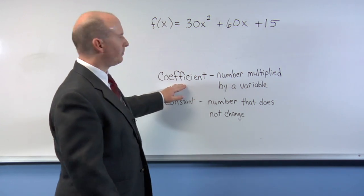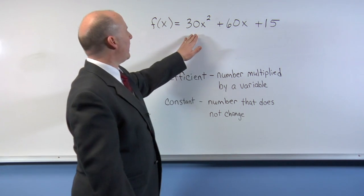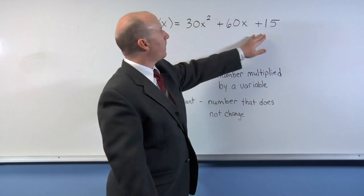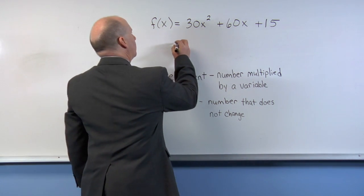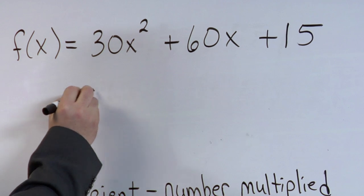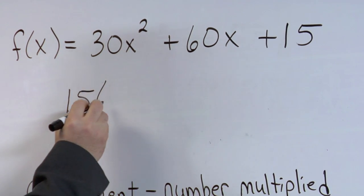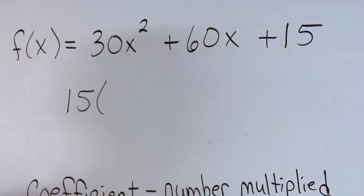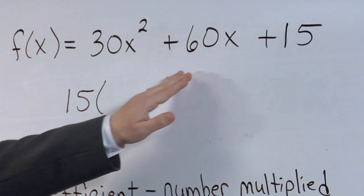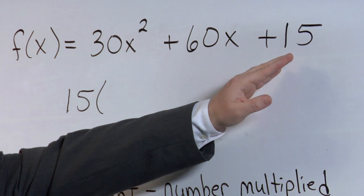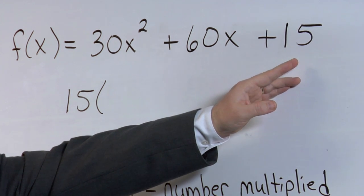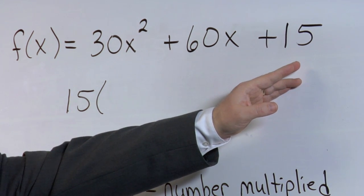But can it be a factor? In order to determine that, let's factor 15 out of this trinomial. We can factor 15 out, because 15 goes into each of these coefficients, and 15 is a factor of itself. In fact, the number 15 has factors 1, 3, 5, and 15.